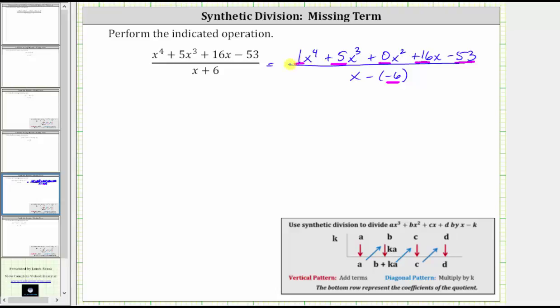So let's first write out the coefficients of the dividend as well as the constant term, which again are one, five, zero, 16, and negative 53. And now we draw the table with k to the left, which is negative six.